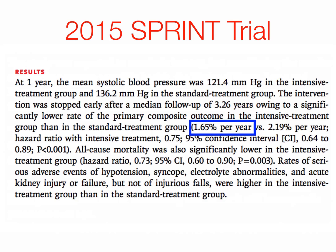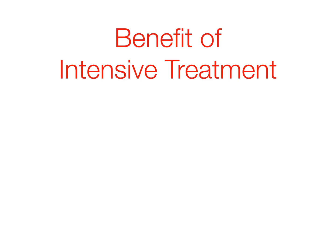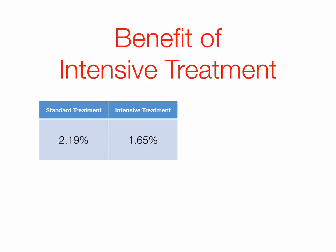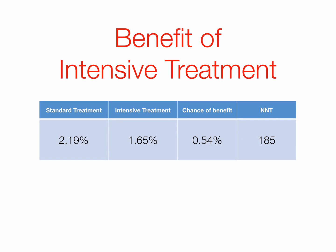1.65% per year in the intensive treatment group versus 2.19% per year in the regular group. Your doctor will tell you that's a 25% decrease in risk. But looking at absolute risk reduction — subtracting 1.65 from 2.19 — we get 0.54%. So the number needed to treat is 100 divided by 0.54, which is 185. You have to give this life-saving treatment to 185 people for one person to benefit.